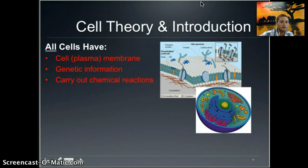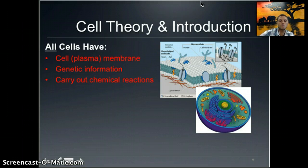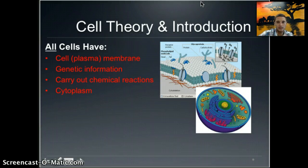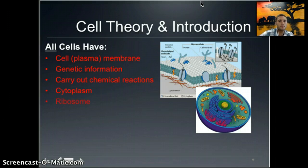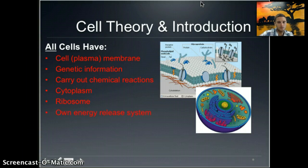Cells also have the ability to carry out chemical reactions. For example, cells performing aerobic respiration to produce ATP is an example of a chemical reaction. They all have a cytoplasm — a jelly-like substance where those chemical reactions often take place. They have ribosomes, which are super important as the location where proteins are formed. Lastly, they have their own energy release system, so they're able to produce energy, just as animals and organisms need energy to do things.